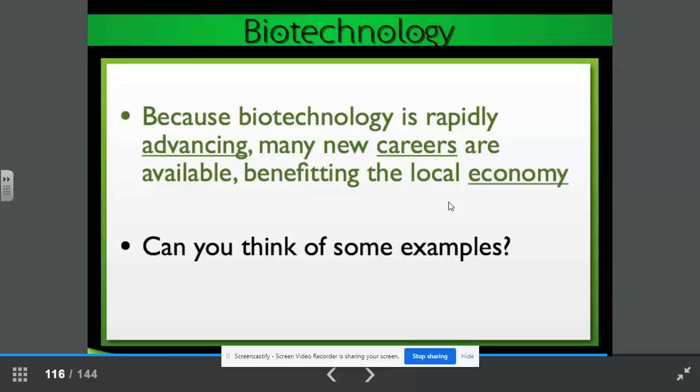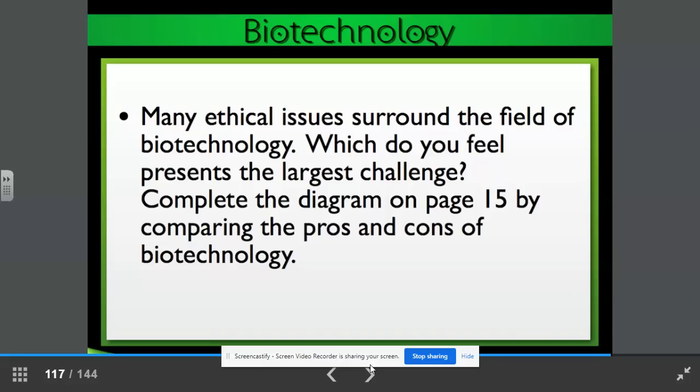We discussed here in North Carolina, we have the Research Triangle Park, the area in Durham and Raleigh and Chapel Hill, where scientists come from all over the world to study and make improvements in biotechnology. Many ethical issues surround the field of biotechnology. Which do you feel presents the largest challenge? Complete the diagram on page 15 by comparing the pros and cons of biotechnology.